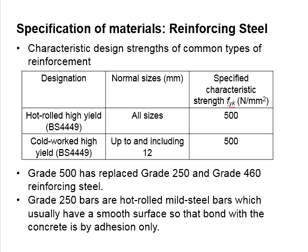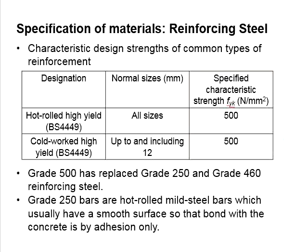The steel bars normally used in reinforced concrete structures have a specified characteristic strength of 500 newton per mm squared. Grade 500 steel has replaced the Grade 250 and 460 reinforcing steel.